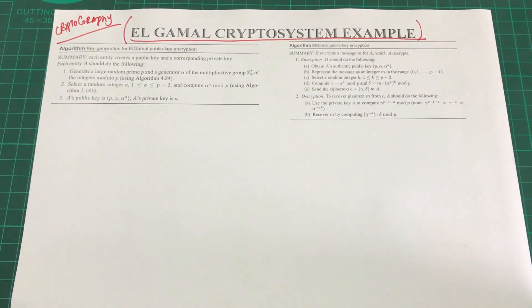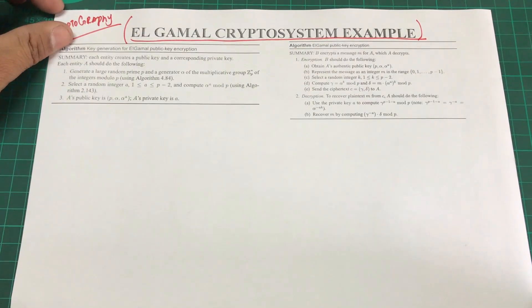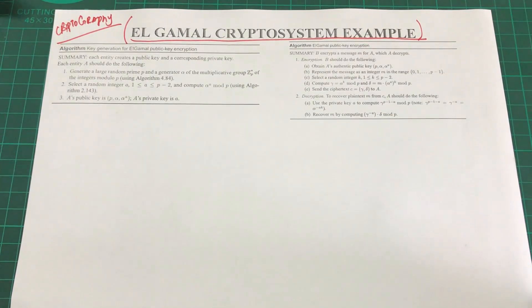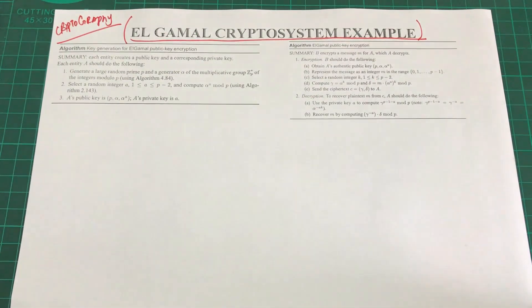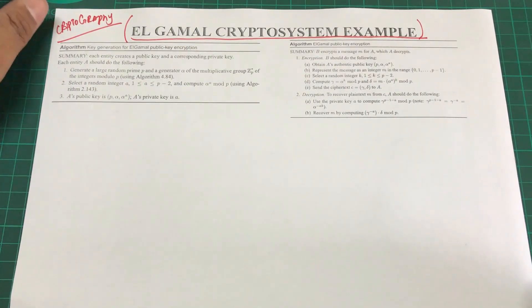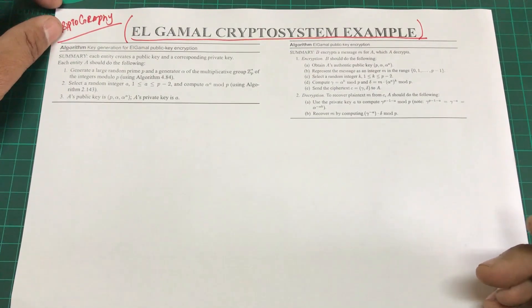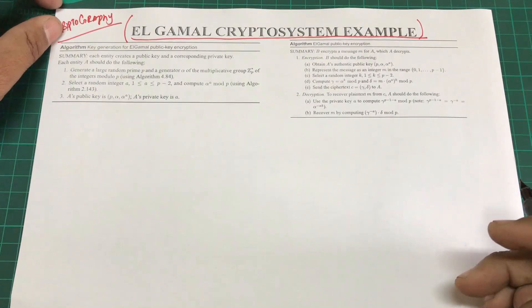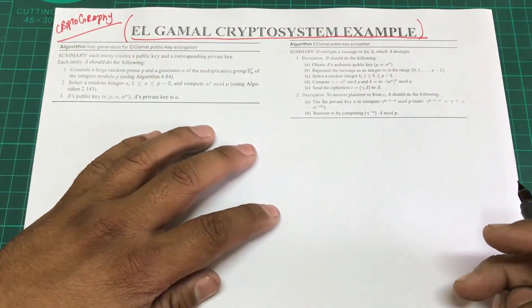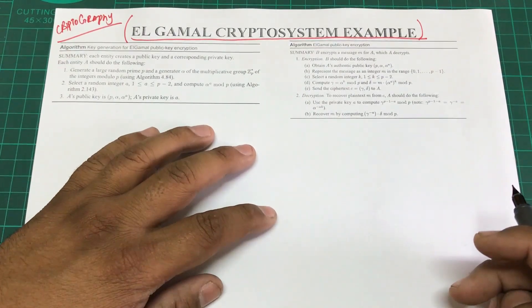We're back with another video on public key cryptography. We looked at RSA, we looked at Diffie-Hellman key exchange. Another crypto system used in public key cryptography is known as the ElGamal crypto system, and this crypto system is based on the discrete logarithmic problem.